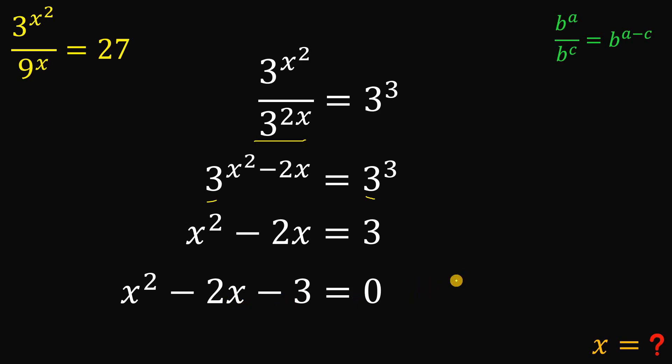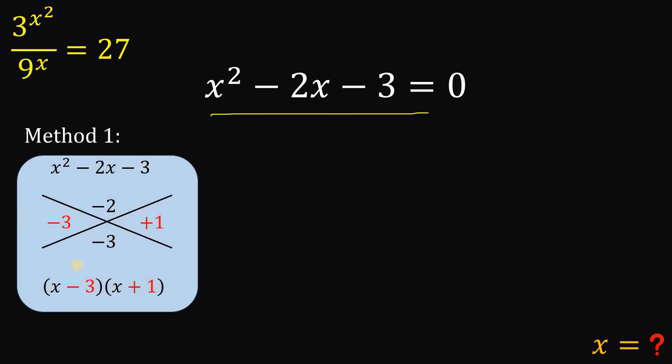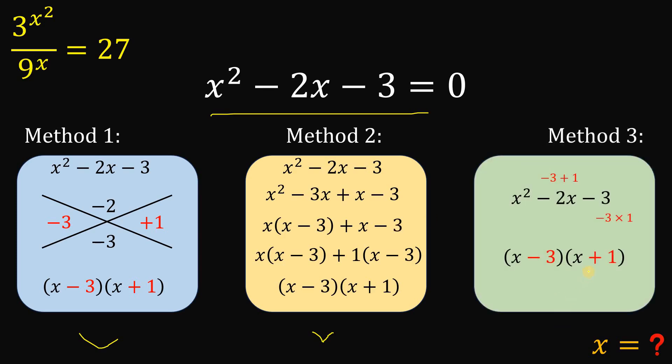Now, let's focus on this result and let's factor out this to find the value of x. And now, I will show you three different methods to factor this quadratic equation x squared minus 2x minus 3 equals 0. Here's the first method. I don't know this name, but this is very common for high school students. Here's the second method. This is the normal factoring techniques you see on the textbook. And here's what I like, the method number 3.